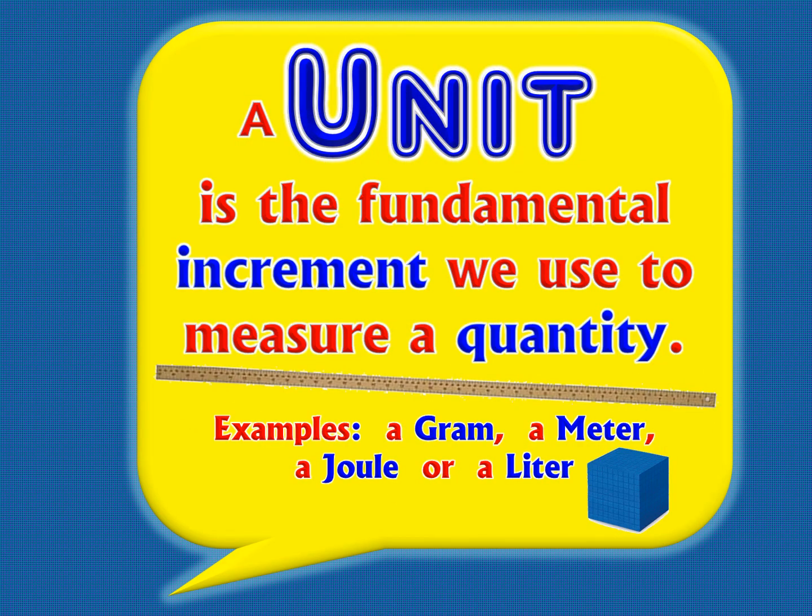Things like degrees Celsius and degrees Fahrenheit are what we call units. A unit is the fundamental increment that we use to measure a quantity — it's what the 'one' is. Like if you say 37, 37 what? 37 grams? 37 meters? Meters is the unit. So the unit is what you're measuring in: grams, meters, joules, liters. A degree on the Celsius scale is actually quite different from a degree Fahrenheit — degrees Fahrenheit are about half the size of a degree Celsius.